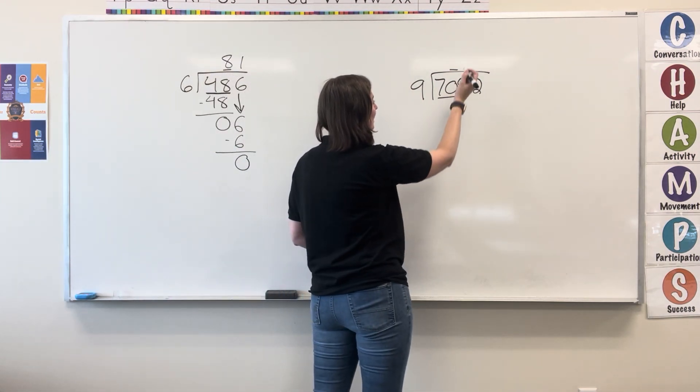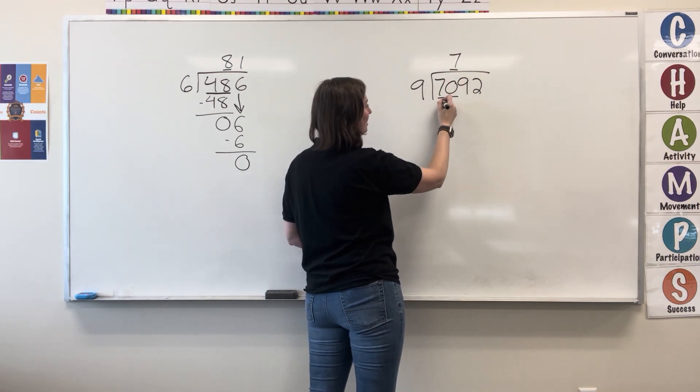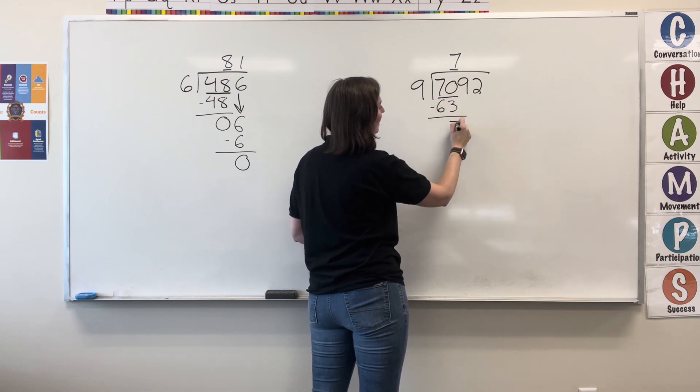9 goes into 70 7 times. 7 times 9 equals 63. Subtract. I get 7.